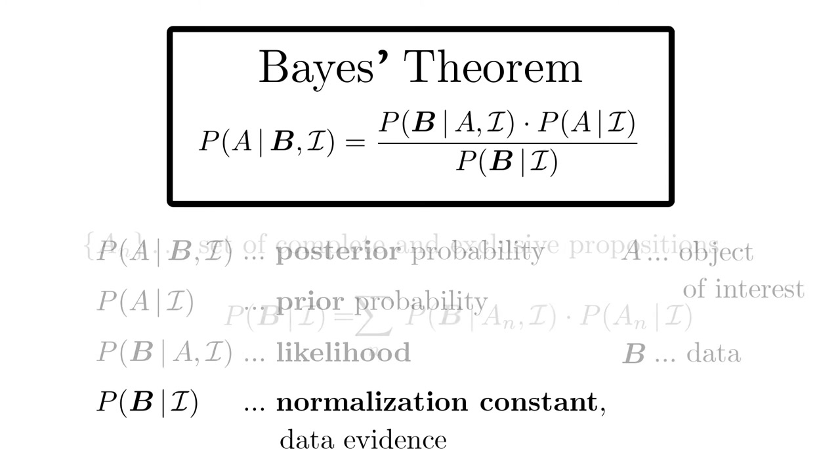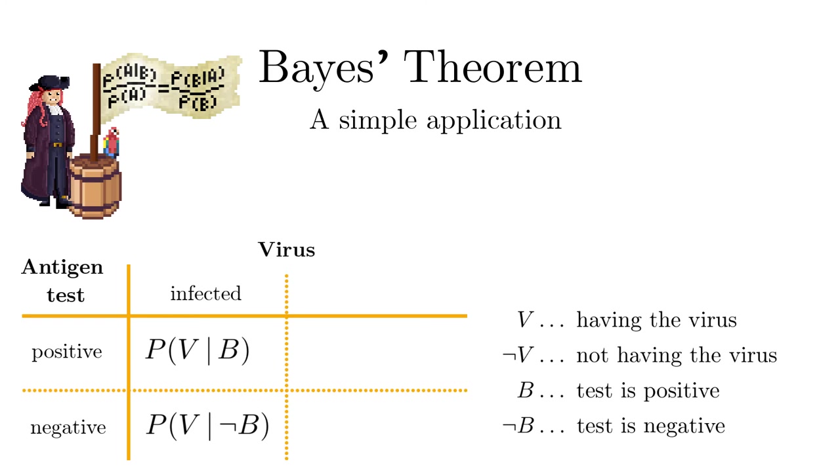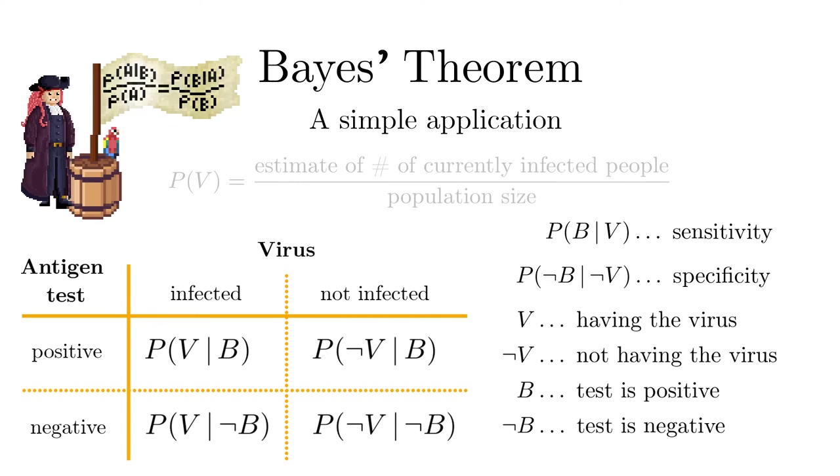The first and most simple application of Bayes' theorem is given if the set only consists of one proposition A and its complement. I leave it up to you to solve the following question. Given a rapid antigen test gave the result positive or negative, what is the probability to have the virus or not to have the virus? To answer this question, we need the sensitivity and the specificity of the test. In addition, we need the prior probability for a person to have the virus without additional information.